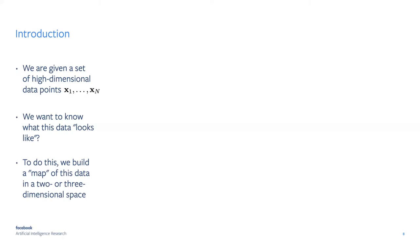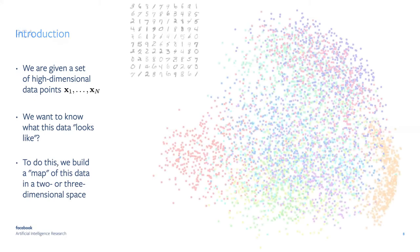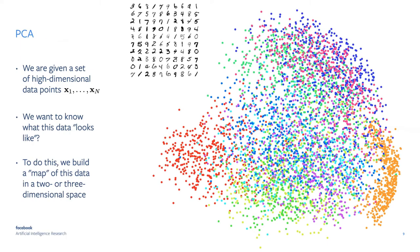The most common method for this is principal component analysis, or PCA. Here's an example of a typical PCA visualization. The underlying data is images of handwritten digits, where each data point's values are pixel intensities. I ran PCA on a couple thousand digit images and obtained a visualization where each point corresponds to a single digit image, colored according to which digit it represents.